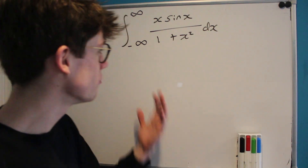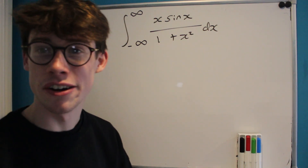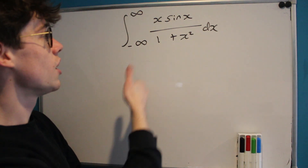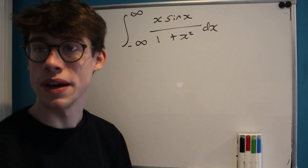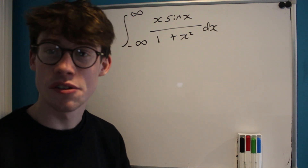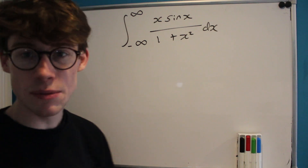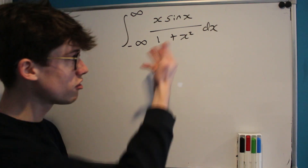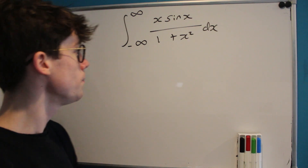We're going to do a classic today — we haven't done an integral in a while and I've found a really nice one. It's the integral from negative infinity to infinity of x sine x over 1 plus x squared with respect to x. I'm sure there are all sorts of really interesting ways to solve this, but the method we're going to be using today is contour integration. There are three things about this integral that suggest contour might be a way to go.